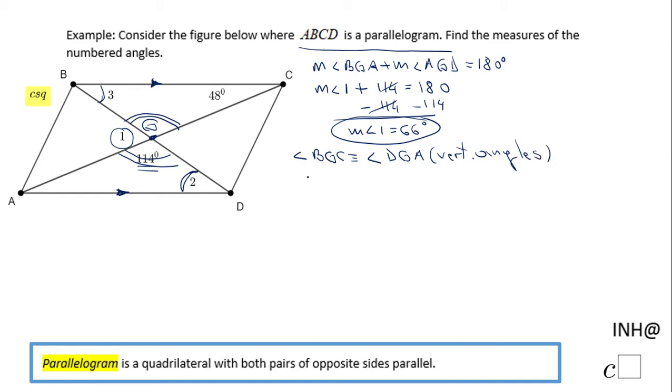That means the measure of angle BGC equals the measure of angle DGA, and DGA is nothing else than 114 degrees.